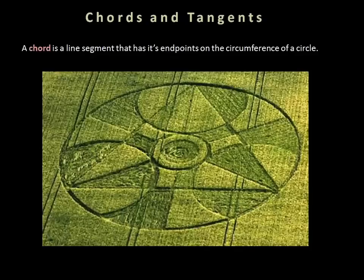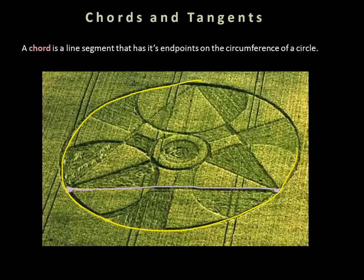This video is all about chords and tangents. A chord is simply a line segment that has its endpoints on the circumference of a circle. Here we have a circle — a crop circle — and if I highlight this line on the triangle, you can see that this segment has its endpoints on the larger circle, so that makes it a chord. There's another chord right here — it's also a chord. That's all a chord is: a segment drawn inside a circle with its endpoints on the sides of the circle.